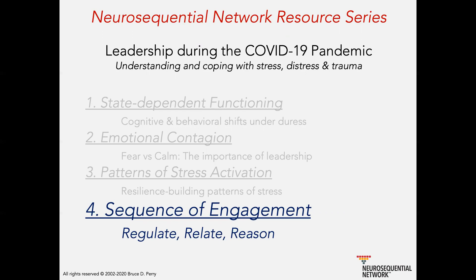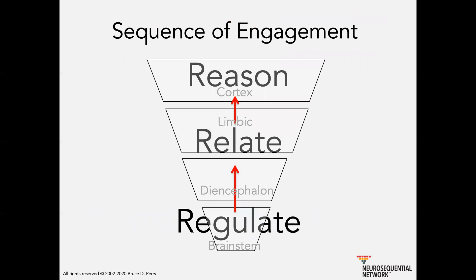So let's just start with what we mean by sequence of engagement. A lot of you have heard the mantra: regulate, relate, and reason, as it pertains to engaging both children and adults who may be dysregulated. This heuristic, this little model I developed to basically communicate a couple of key points about the way the brain works and why it's very difficult to reason with somebody when they're dysregulated, when they're distressed, when they're overwhelmed. And really, it has to do with the basics of the organization of the brain.